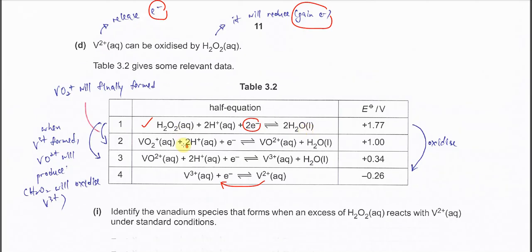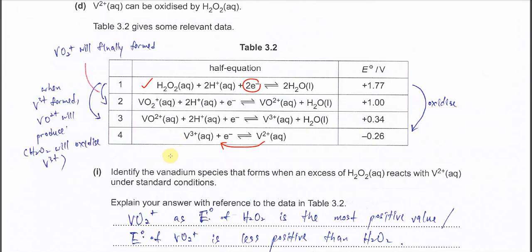Now it asks: identify the vanadium species that forms when excess H₂O₂ reacts with V²⁺. Understand the condition. Because it says excess H₂O₂, means the reactions will continue. For example, because it started with H₂O₂ with V²⁺. H₂O₂ will gain electrons and at the same time, V²⁺ must release electrons and form V³⁺.